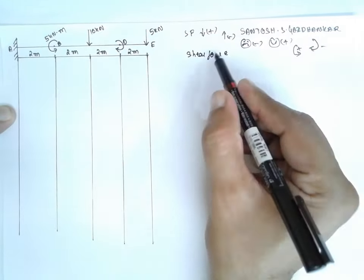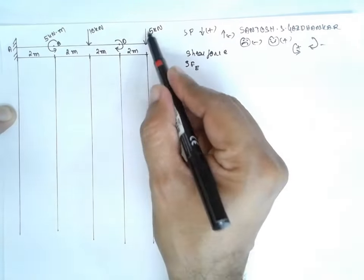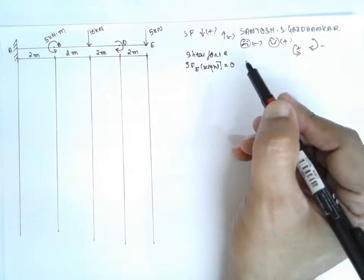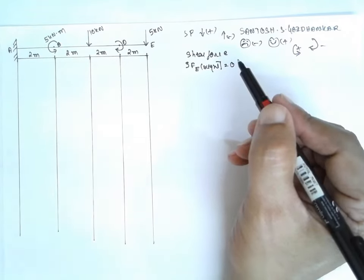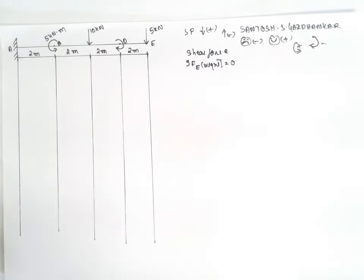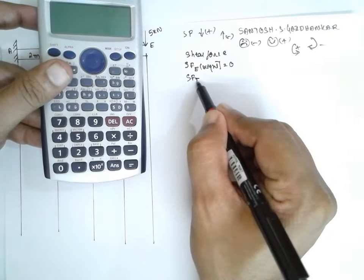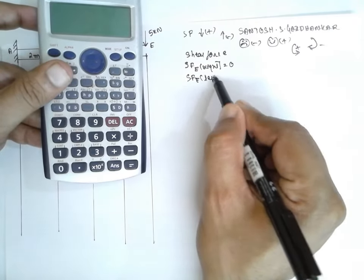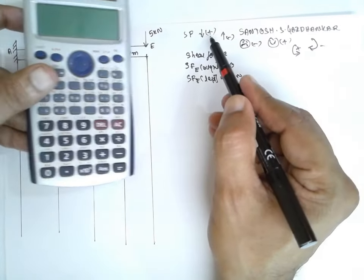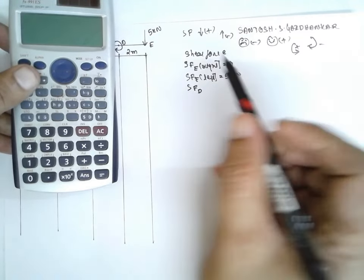Shear force at E: there is a load acting here, so we consider the right side. At the right, it is zero. On the left side, SF at E left equals 5 kilonewtons, because the downward load is considered positive. Next, at D: the couple does not have any effect on shear force, so SF at D equals the previous value, 5 kilonewtons.